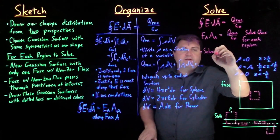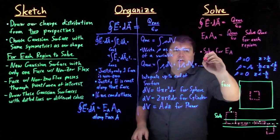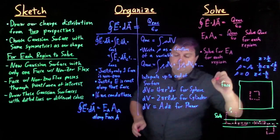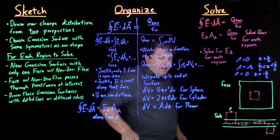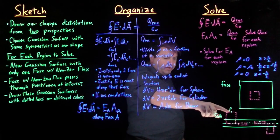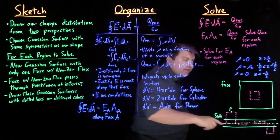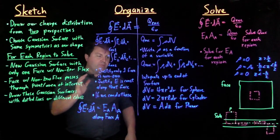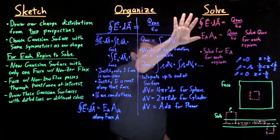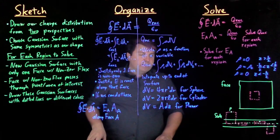And then we solve charge enclosed for each region, and then we finally solve for the electric field of A for each region. So if we have these four regions, then we would have to have four answers for the electric field at this point, at this point, at this point, and at this point. Very often we'll only have two or three, sometimes just one. So this is how we use sketch, organize, solve to solve for electric fields of Gaussian surfaces with a planar result as an example.